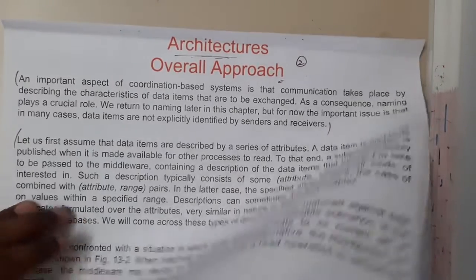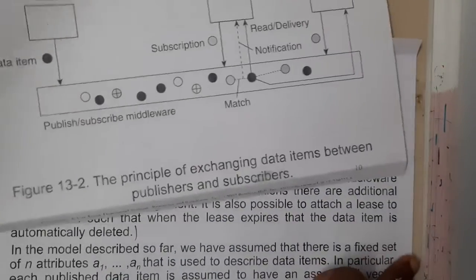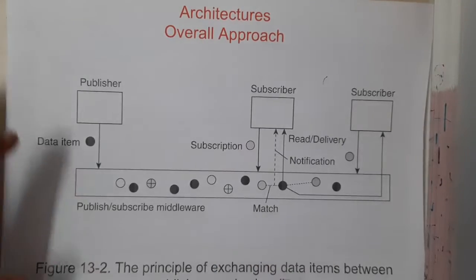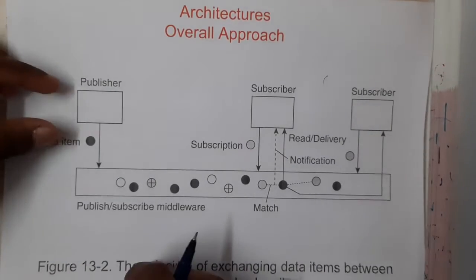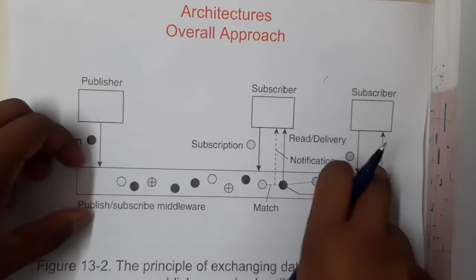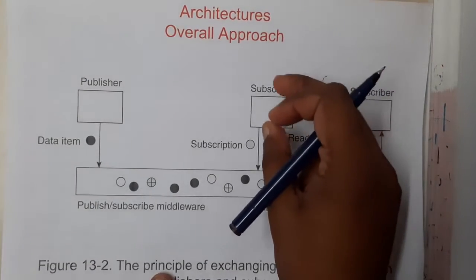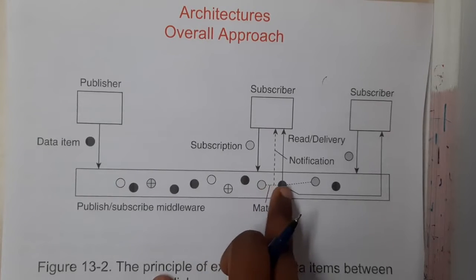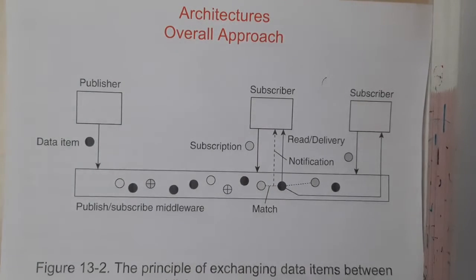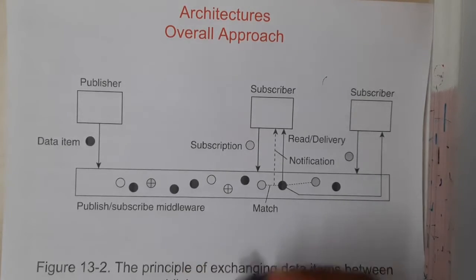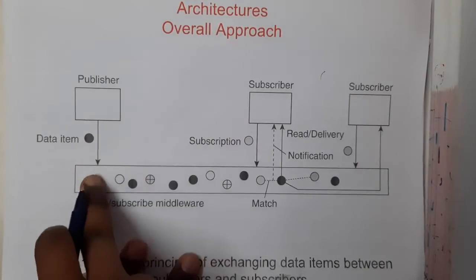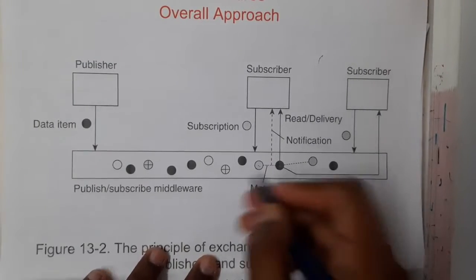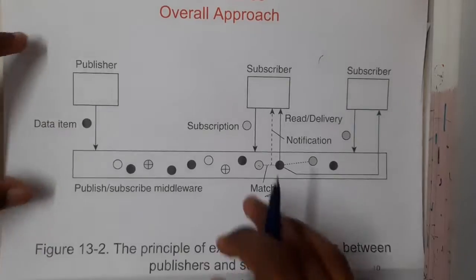Let us go through the first diagram — this is just the exchange of data. We will discuss the detailed subscribers and publishers diagram later; this is just an introduction diagram. Basically, the publisher will be publishing his data into the channel, and based on the subscriber's requirement — based on those names, tags, and so on — the data will be shared. For example, if a subscriber searches for a video on 'coordination-based systems architecture diagram' on YouTube and I publish the same video, these two will match and the video will appear in his search results.